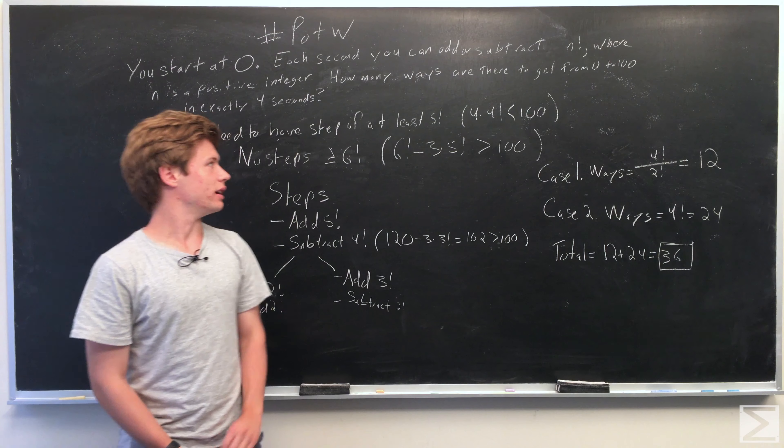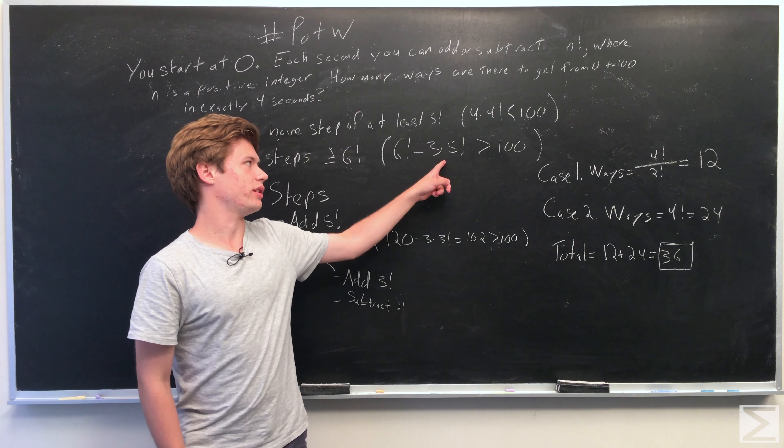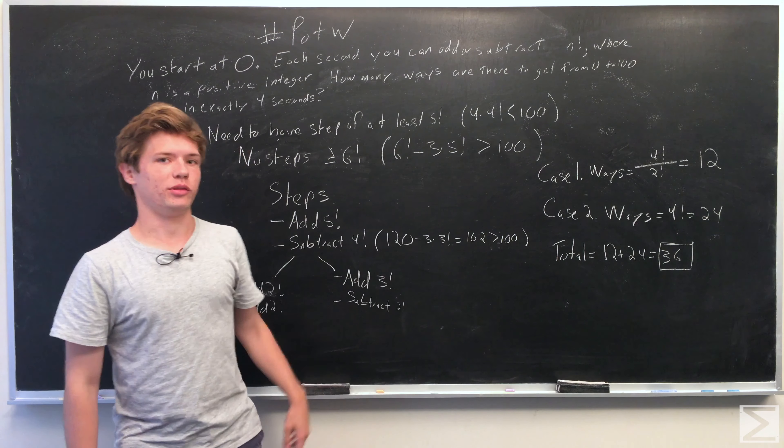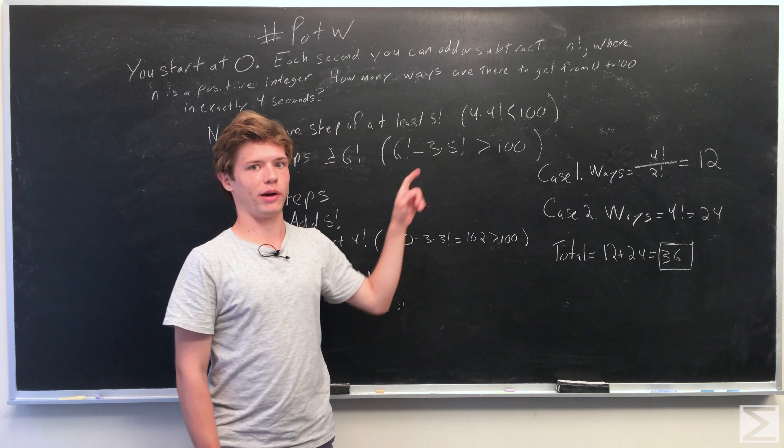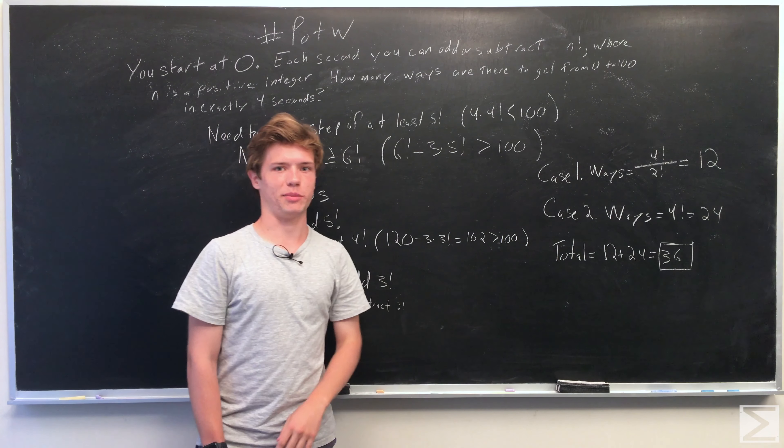And 720 minus 3 times 5 factorial equals 360, which is greater than 100, so we won't have enough steps again.